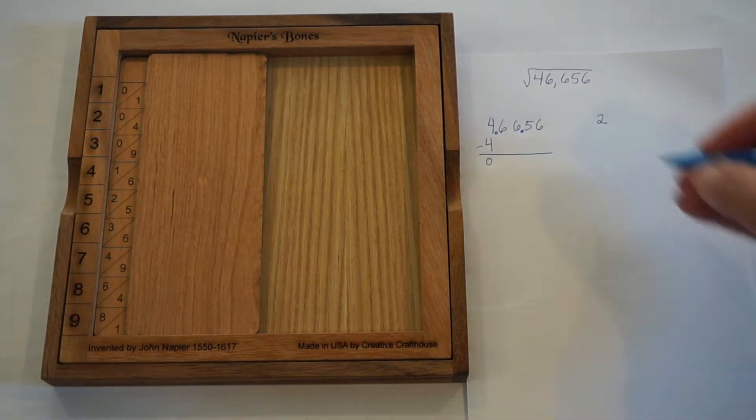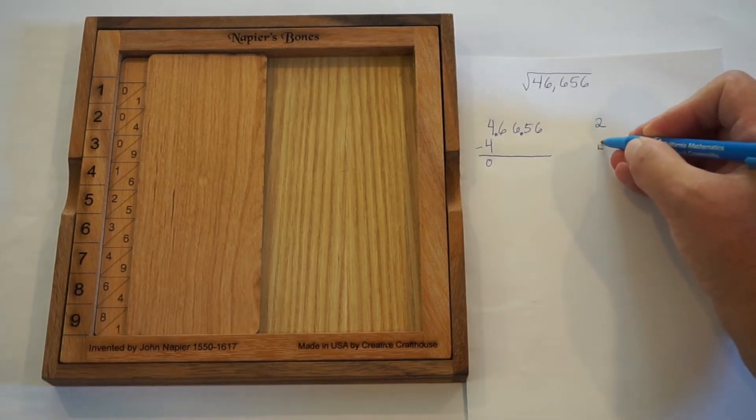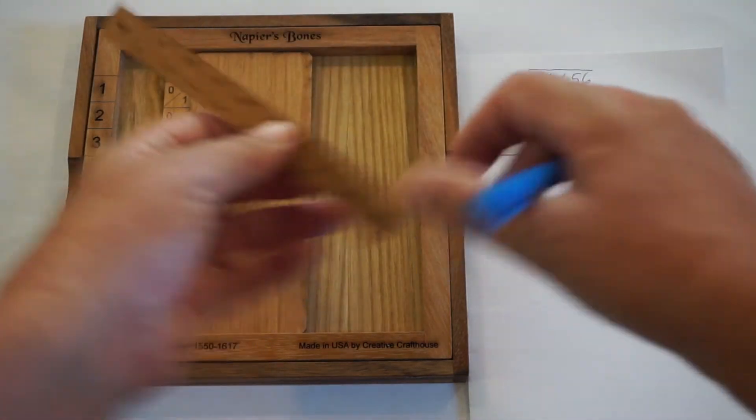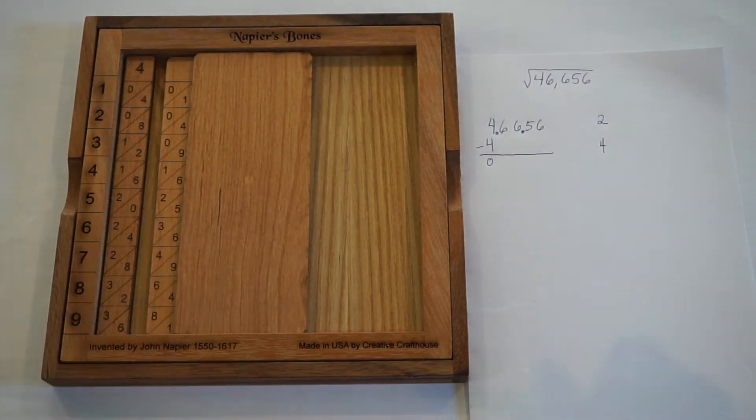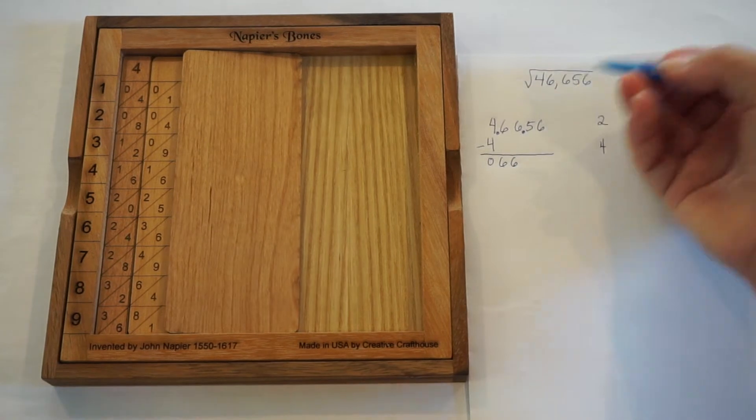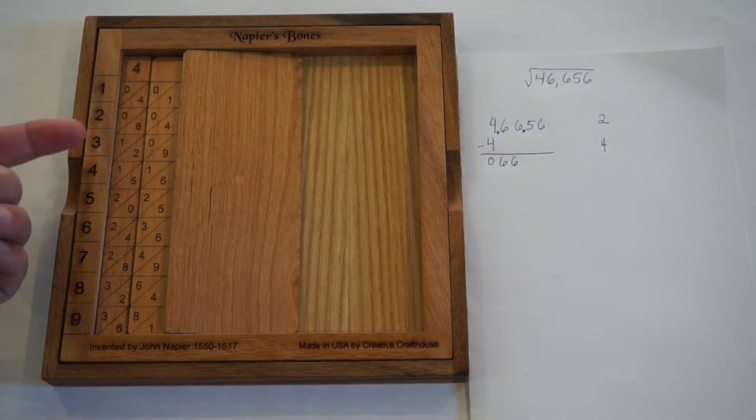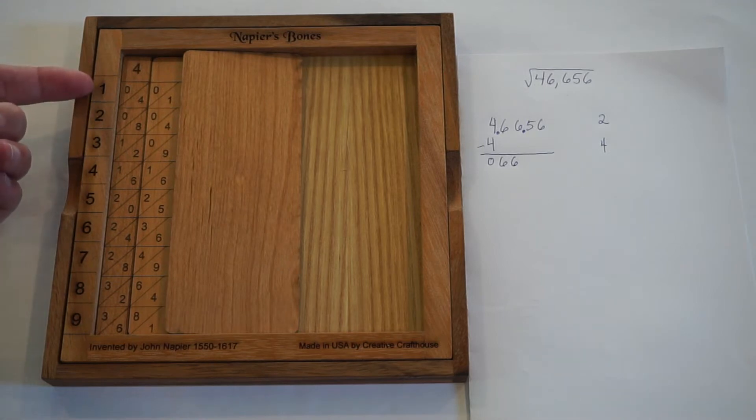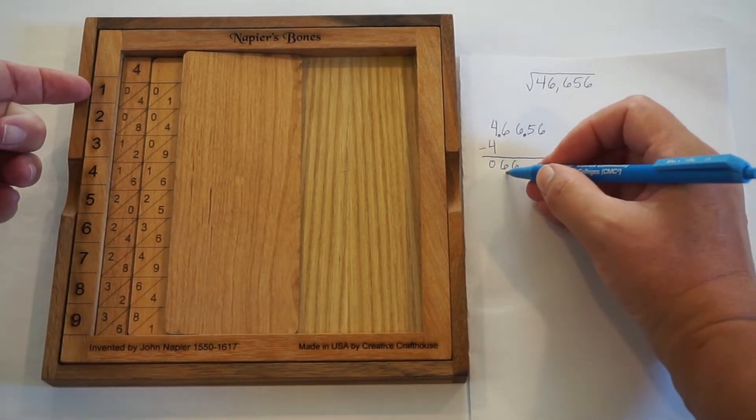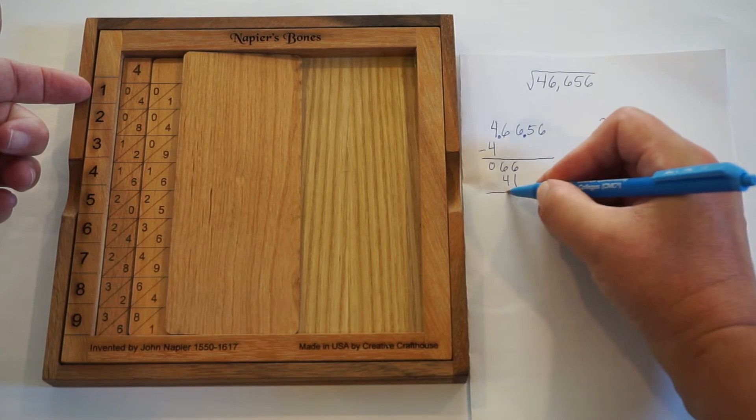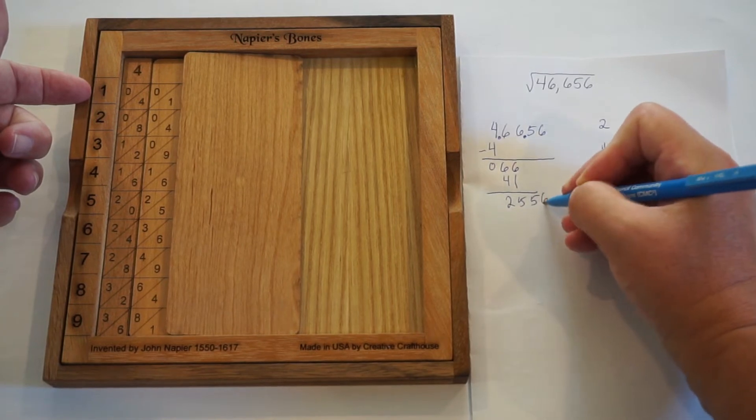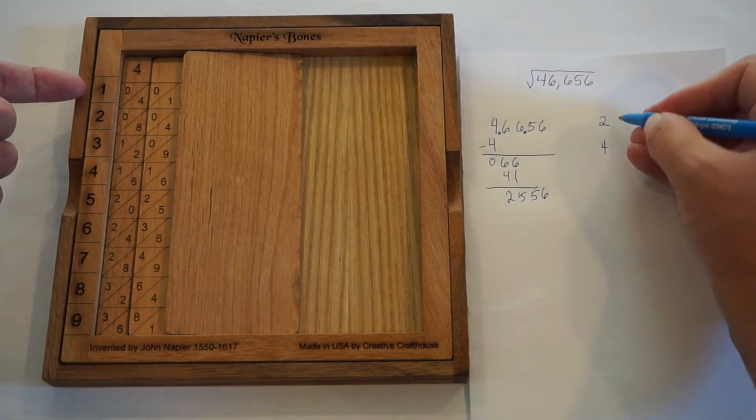In order to find the next rod that we need to use, we double the 2 and we get a 4. And that 4 goes right in front of the squares, the square root rod. We go ahead and bring down. Didn't really need the 0 out front. We've got 66. So looking here, I've got 129, I've got 84, I've got a 41. The 84 is too big. So we're looking at number 1 row, which is 41. When we subtract, we get 25, and we're going to bring down.